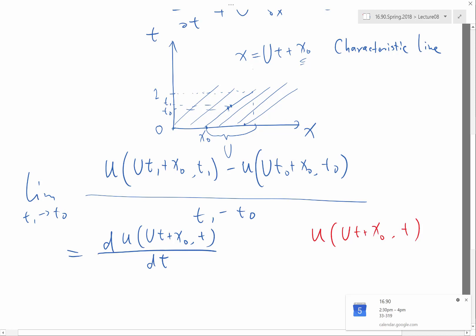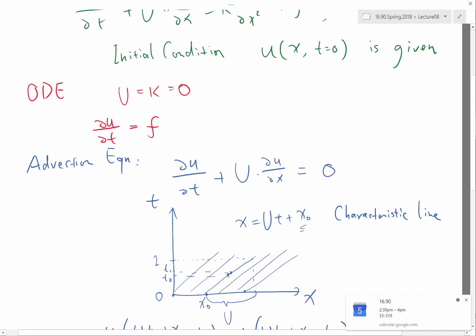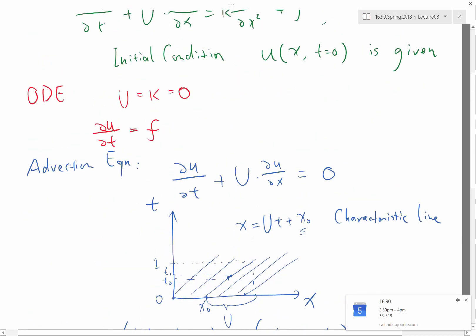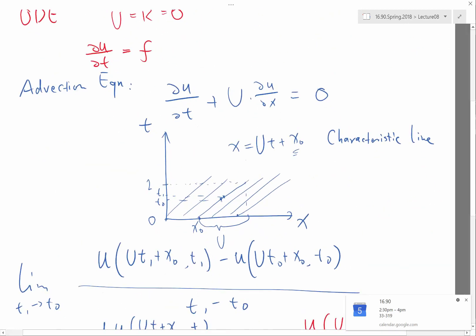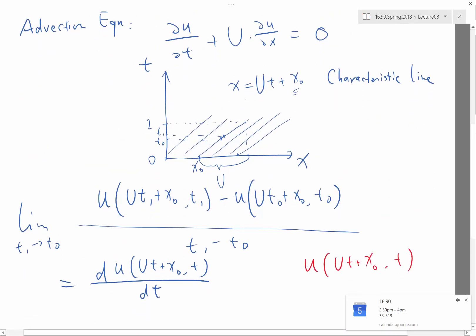Yes? Sorry? The small u is a solution of this differential equation, right? So here we always write the small u. So let's say the active variable here is only t, right? So then I can write it as just an ordinary derivative.